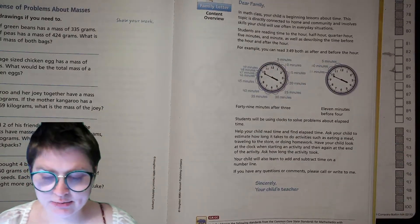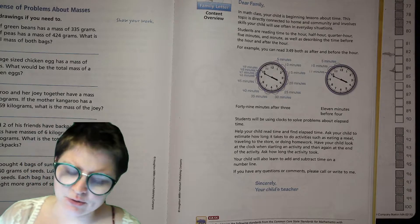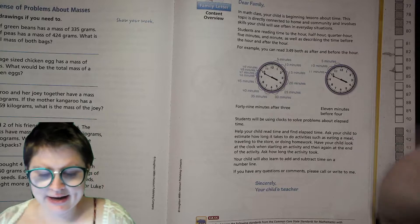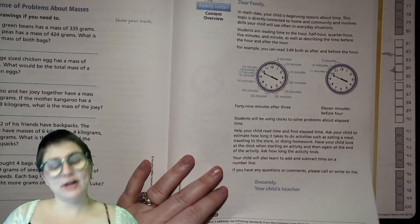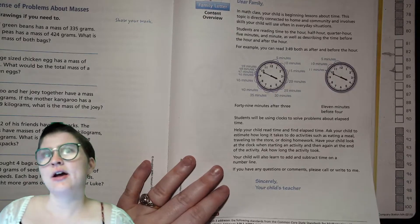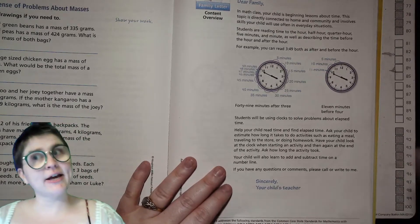Today we are beginning the part of unit 3 where we are learning to tell time on an analog clock. You'll be learning to read time to the hour, half hour, quarter hour, five minutes, and minute, as well as describing the time before the next hour and after the next hour. That sounds like half past 7, quarter till 8, stuff like that.